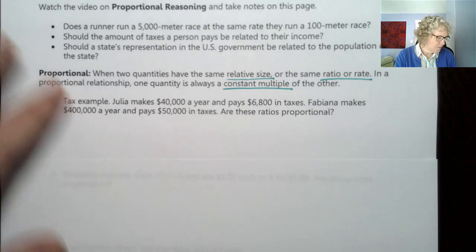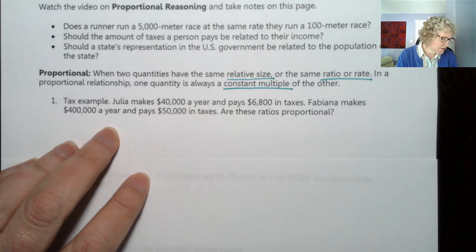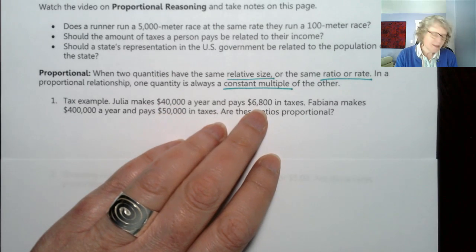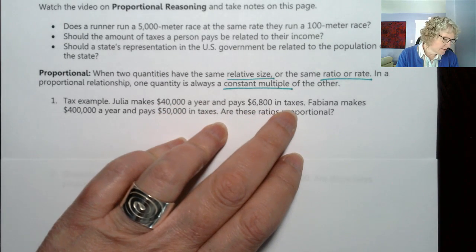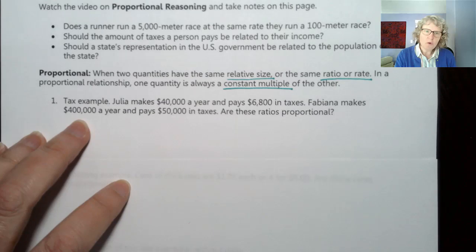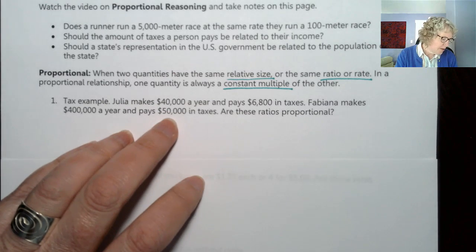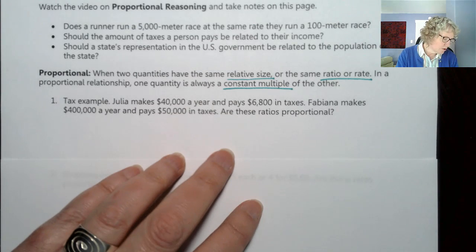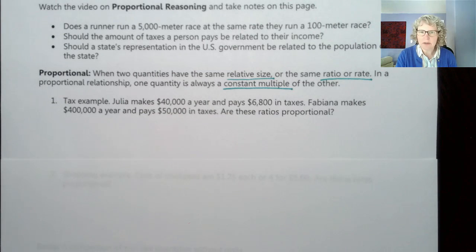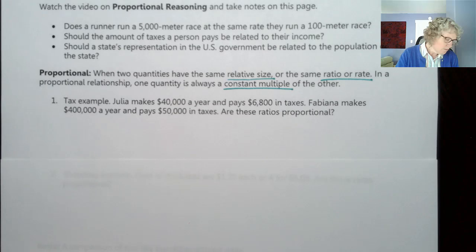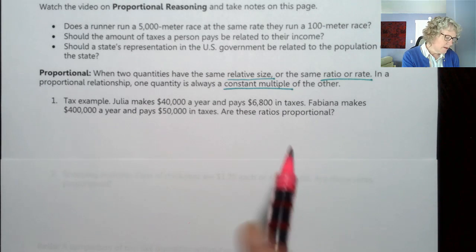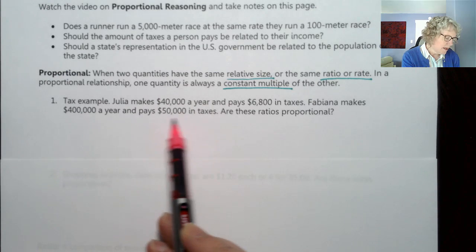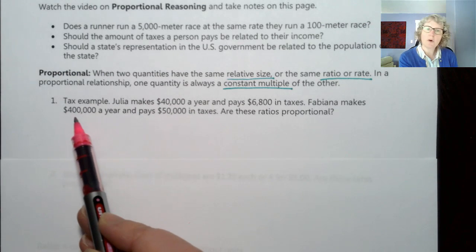Taxes, which is related to one of these questions. Julia makes $40,000 a year and pays $6,800 in taxes. Fabiana makes $400,000 a year and pays $50,000 in taxes. Are these ratios proportional? So if we divide these, we're going to get a ratio. What do you think?